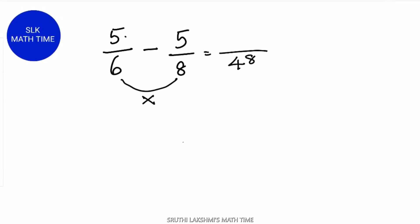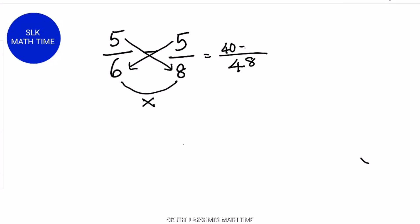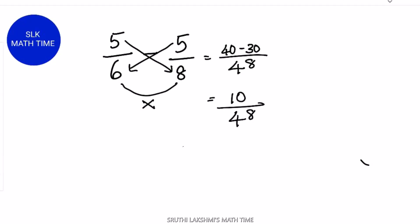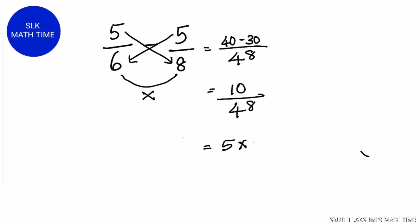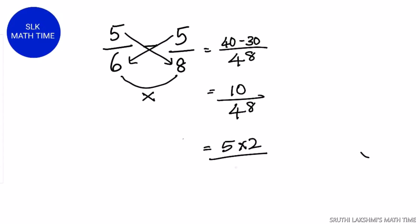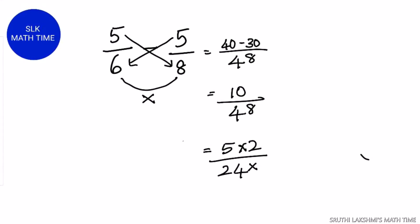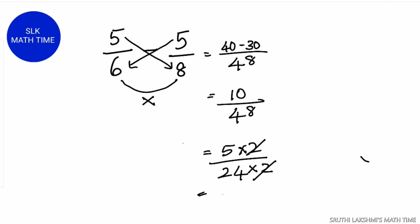Next, cross multiply 5 into 8 and 5 into 6. 5 into 8 is 40 and 5 into 6 is 30. 40 minus 30 is 10 by 48. Now, 10 and 48 are divisible by 2. 5 times 2 is 10 and 24 times 2 is 48. We cross cancel 2 and 2 to get the final answer.